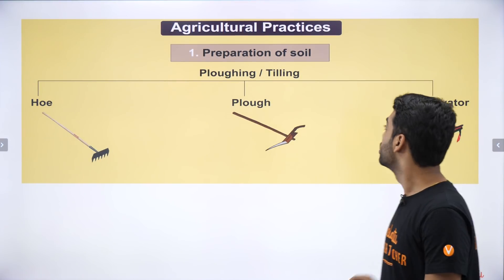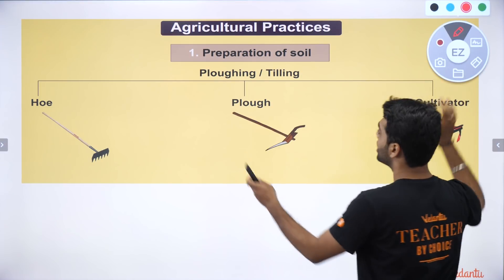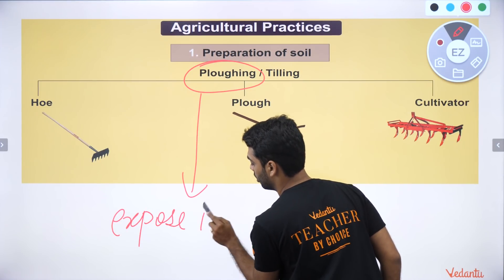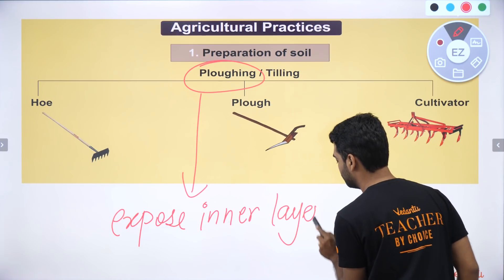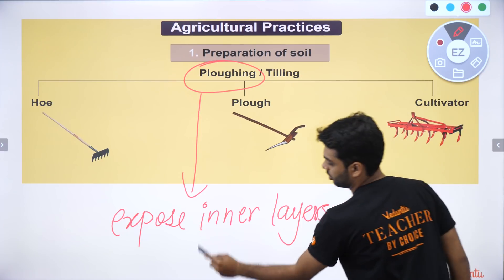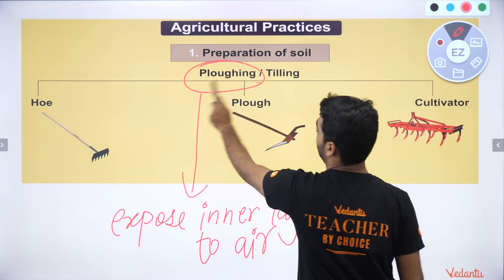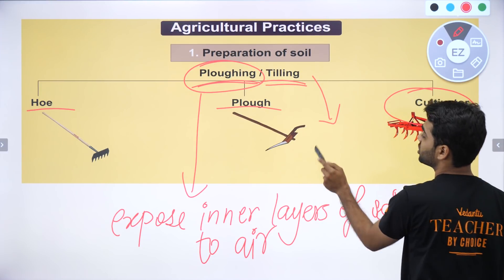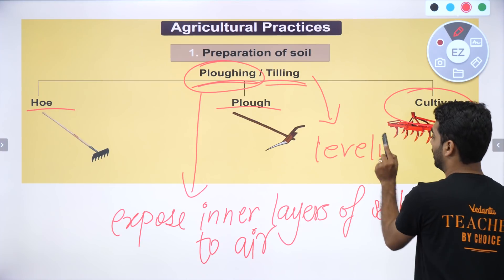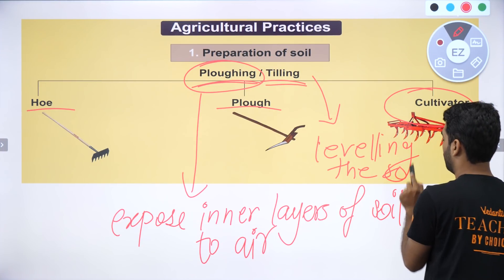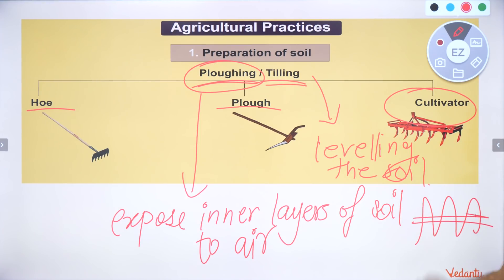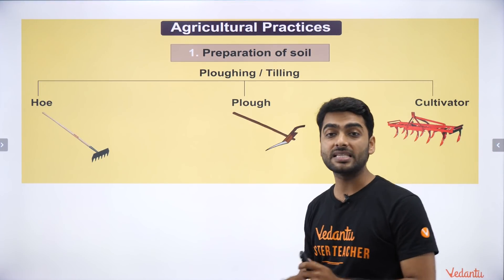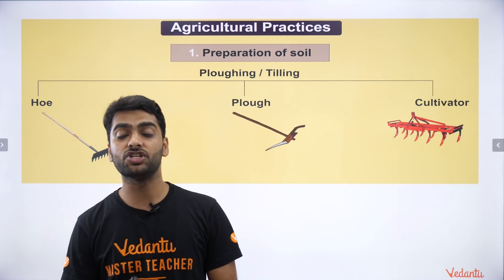Preparation of soil begins with plowing or tilling. Plowing means you expose the inner layers of the soil to air. Tilling means leveling the soil to give it a good, even surface. Plowing and tilling are the two important steps of soil preparation. These can be done using a hoe, a plow, or a cultivator.